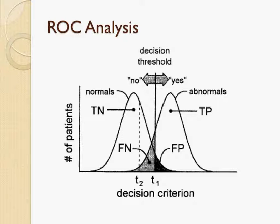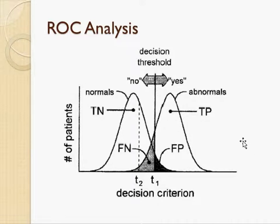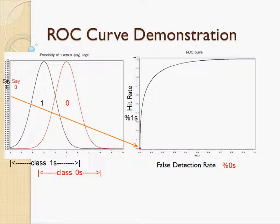This graph demonstrates how the classification threshold affects the areas of the four regions: TN, FN, FP, and TP. As the threshold changes, the hit rate and the false detection rate change correspondingly. The ROC analysis is the process of finding the optimal threshold by evaluating the hit rate and the false detection rate.